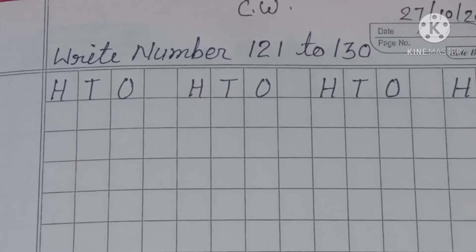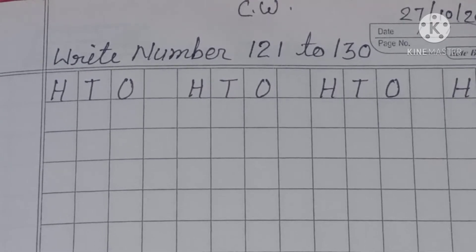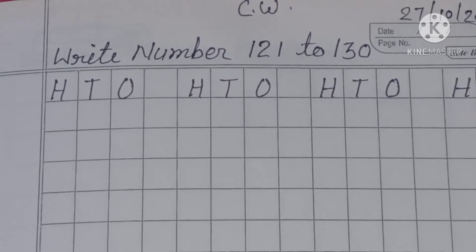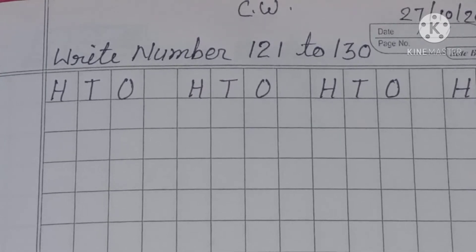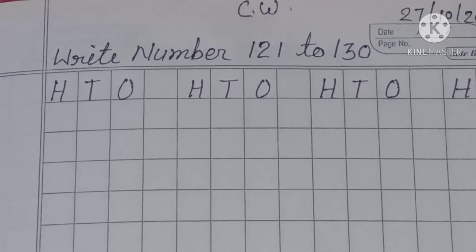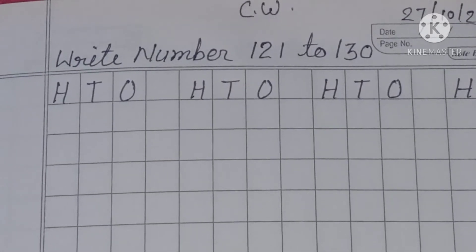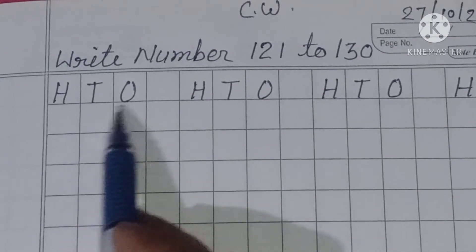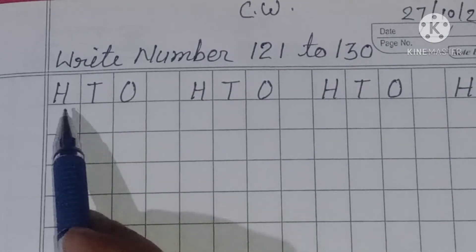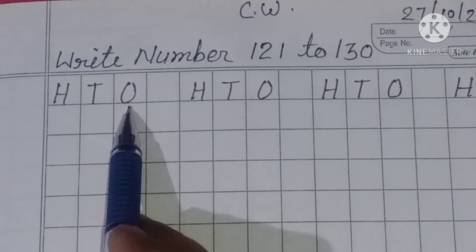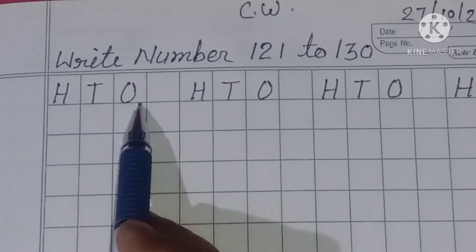Yes, today we will write counting numbers from 121 to 130. So let's start by writing the date: 27/10/20. Then C.W. First of all we will write hundreds, tens, ones on the top.